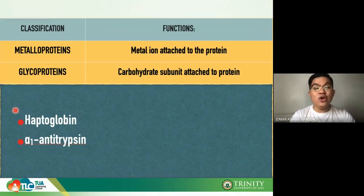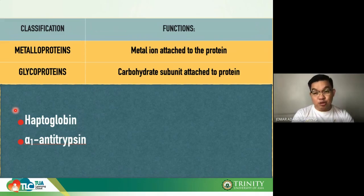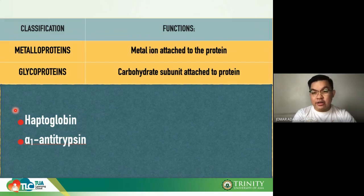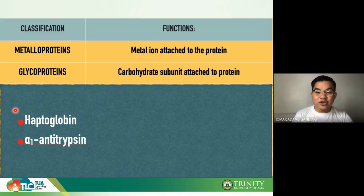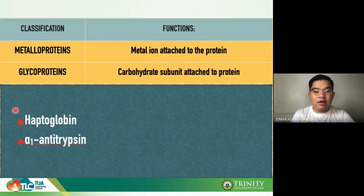Glycoproteins are proteins that have a carbohydrate subunit attached to the protein. Examples include haptoglobin and alpha-1 antitrypsin. Their specific functions will be covered when we discuss the major plasma proteins.